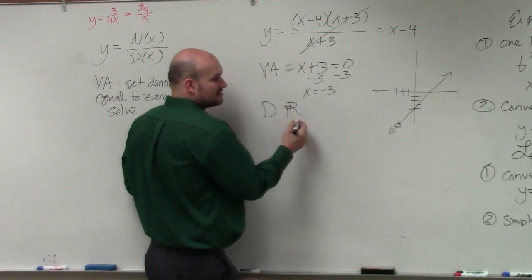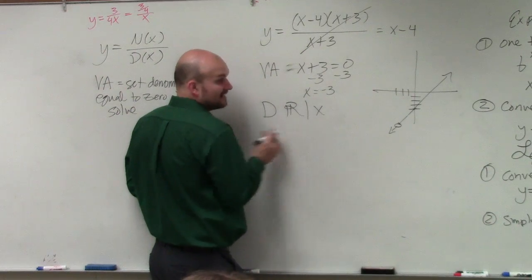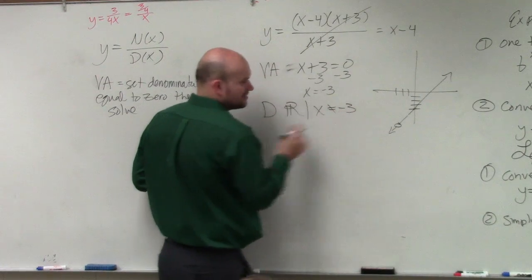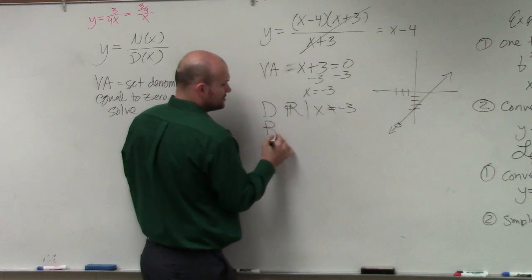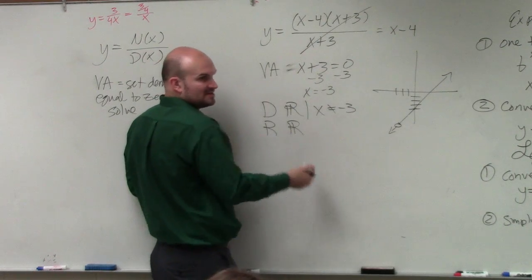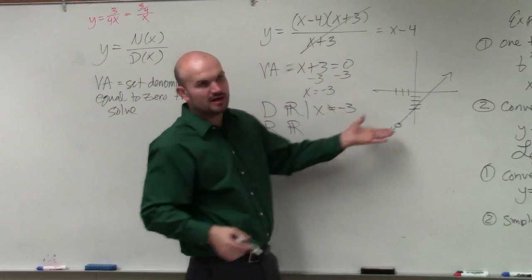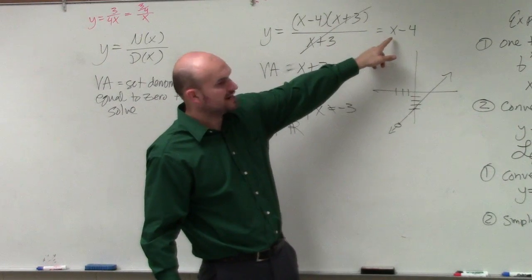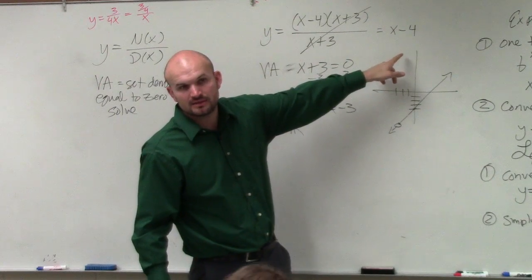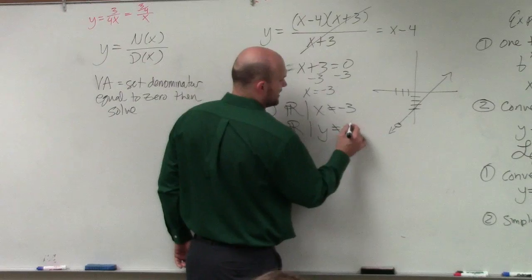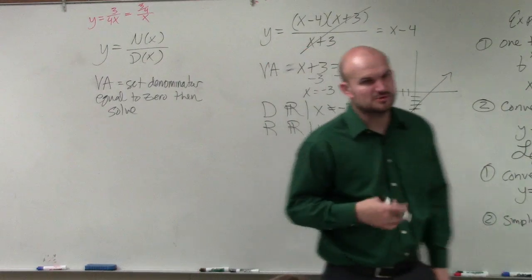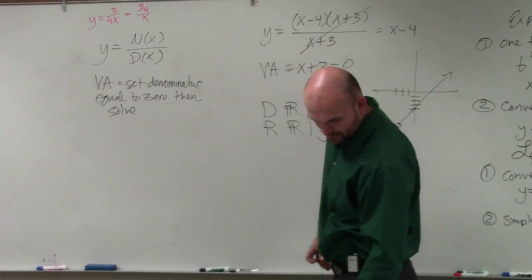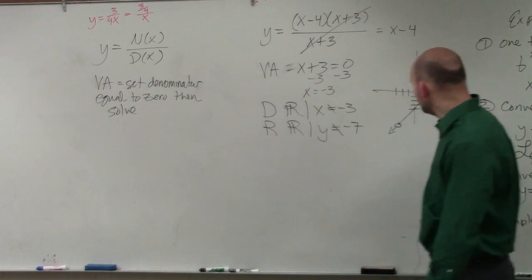Domain is all real numbers, such that x cannot equal the discontinuity, which is still the same. x can't equal negative 3, right? So that doesn't change. The range doesn't change. Just think of it like an asymptote. It's all real numbers, except y cannot equal. Now, we do need to figure out what that, at x equals negative 3, we need to figure out what that would be. So if you plug in negative 3 in for that, negative 3 minus 4 would be negative 7. So such that y cannot equal negative 7. Because we need to figure out what would the y value be at x equals negative 3.